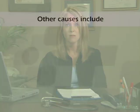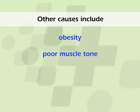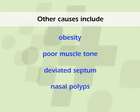The most common cause of obstructive sleep apnea in children is enlarged adenoids or tonsils. Other causes include obesity, poor muscle tone, and abnormal structures in the face, such as a deviated septum or nasal polyps.